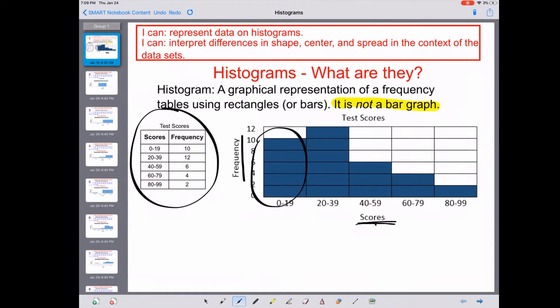Each of these bars that we see here—like this first bar right here—shows us that we have 10 students who scored between 0 and 19. The next bar shows us that we have 12 students scoring between 20 and 39. The next bar shows us six students scoring between 40 and 59, four students between 60 and 79, and two students between 80 and 99.